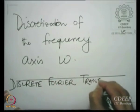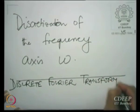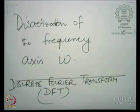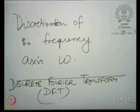The discrete Fourier transform, or the DFT as we would refer to it in the future, is discrete both in time and frequency. The discrete time Fourier transform uses a signal or a sequence that is discrete in time, but it is continuous in frequency. In contrast, the discrete Fourier transform about which we are going to talk today is discrete in both domains.